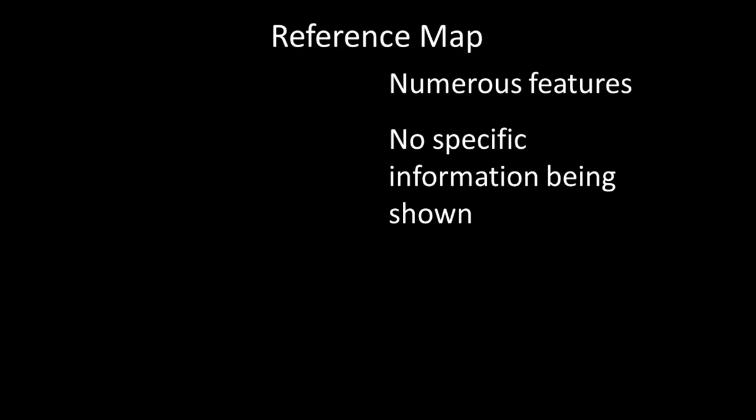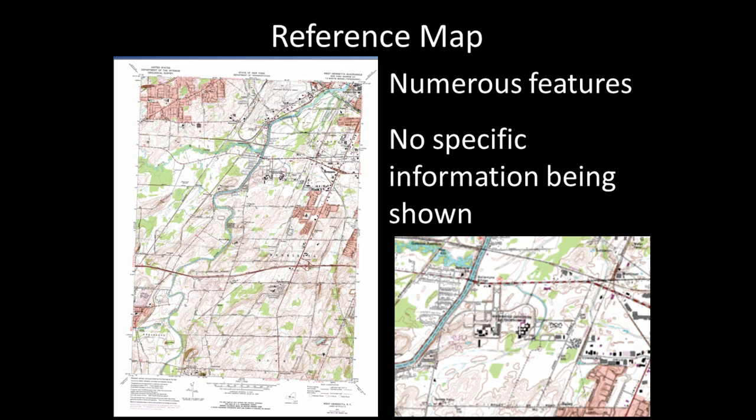A reference map shows numerous features and does not convey a particular message or communicate specific information. Another way to think of a reference map is that it provides the background context to ground other features or specific areas of interest on the map. Shown here is an excerpt from the West Henrietta U.S. Geological Survey 1-24,000 scale quadrangle map. As a reference map example, note how the map displays several features such as roads, water, contour lines, buildings, and place names. A map like this would be useful providing geographical context to some spatially oriented activity.